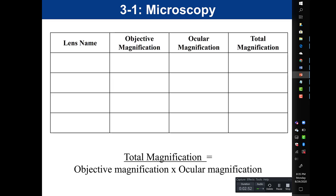Now let's talk about how much our lenses are going to magnify our image. When calculating total magnification, we take the objective magnification — the amount the objective lens magnifies the image — and multiply it by the ocular magnification. That gives us our total magnification.